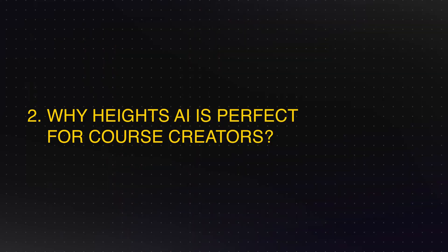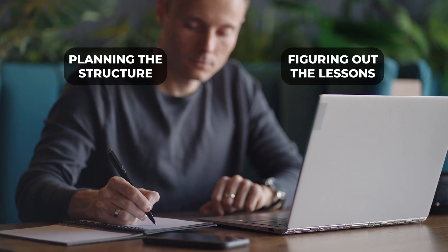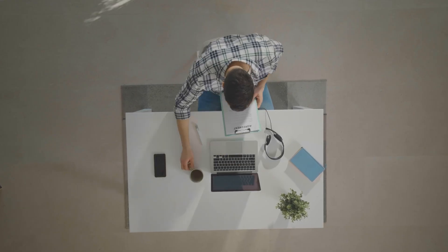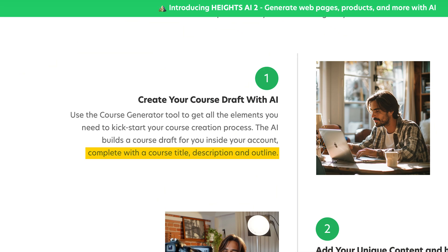Why is Heights AI perfect for course creators? If you've ever tried to create a course before, you know it can be an overwhelming process. There's planning the structure, figuring out what lessons to include, writing scripts, recording videos, and setting up everything from a checkout page to a website. All these little details can add up and create a mountain of work. That's where Heights AI comes in — with Heights AI, you don't have to spend hours figuring out your next lesson. You can simply describe your course, say something like 'I'm teaching photography basics,' and Heights AI will generate a full course outline for you, including lesson title suggestions, descriptions, and recommended topics to cover. This is a huge time saver.